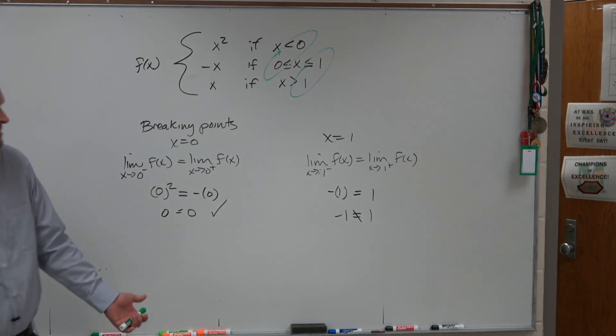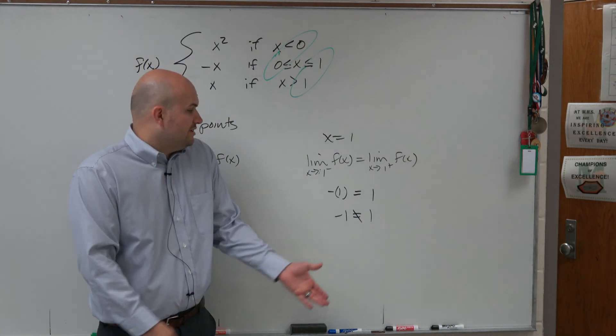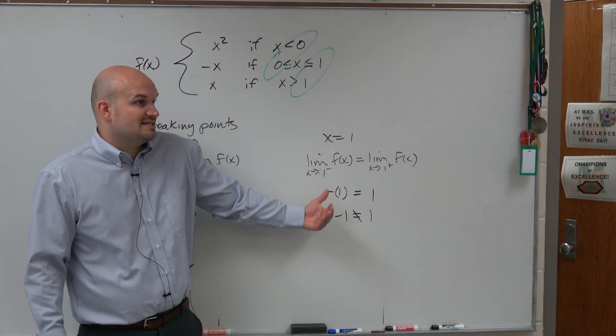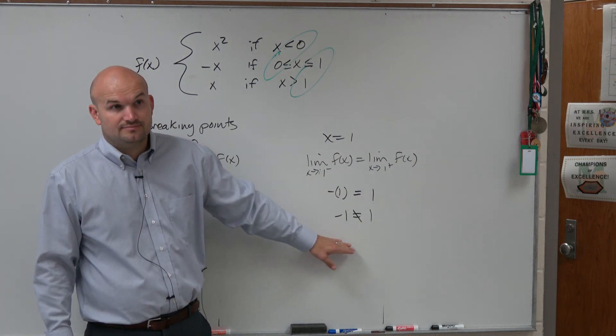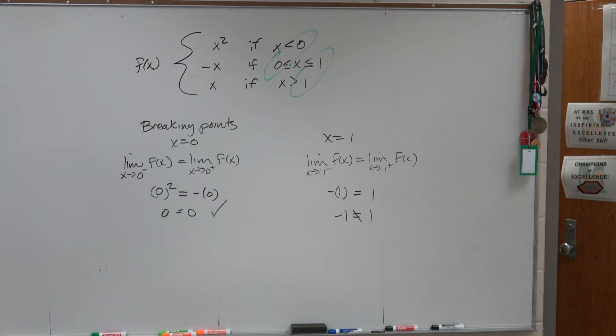And then again, how do we know what type of discontinuity it is? We know that this is a discontinuous function because it has a jump discontinuity. One of them's at negative 1, one of them's at 1.